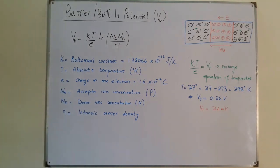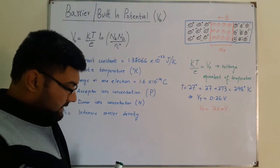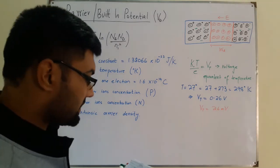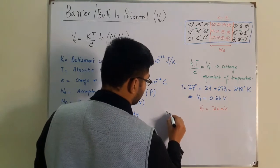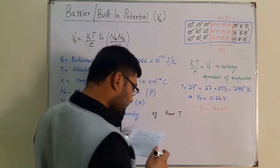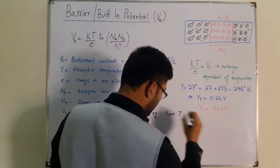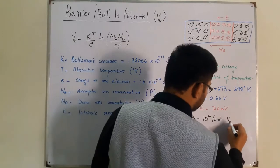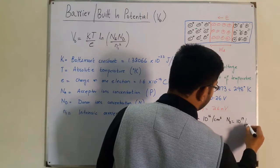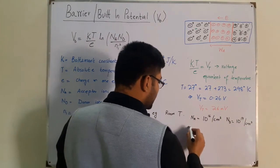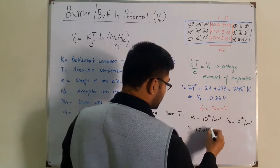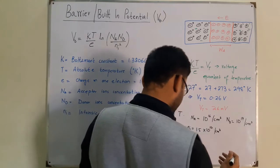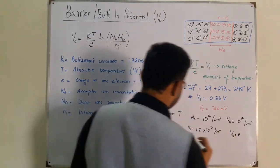Here is an example at room temperature. NA (acceptor ions concentration on the P side) is given as 10¹⁶ per cm³. ND (donor ions concentration) is given as 10¹⁷ per cm³. The intrinsic carrier density NI is 1.5 × 10¹⁰ per cm³. They ask: what is VB? This is for silicon.